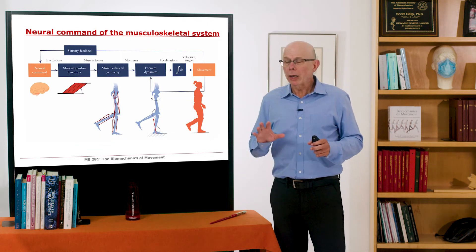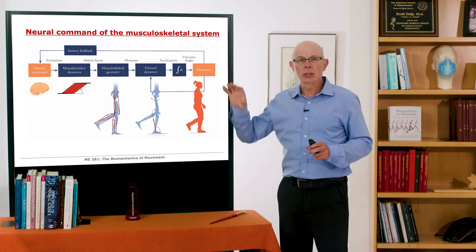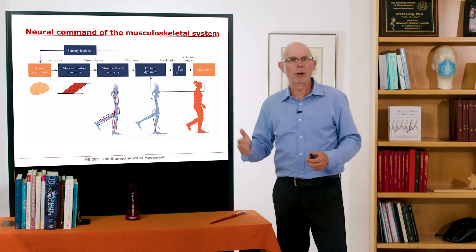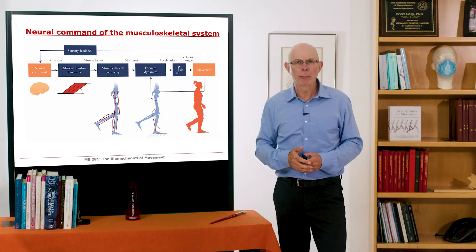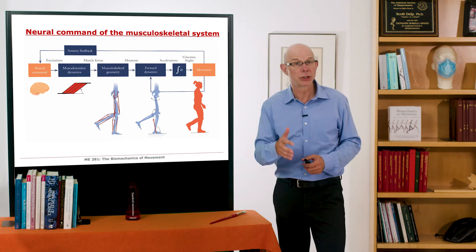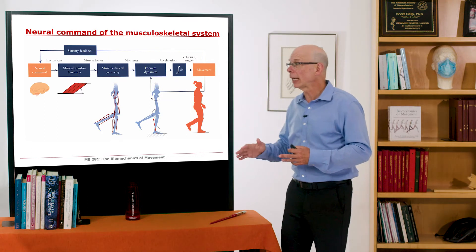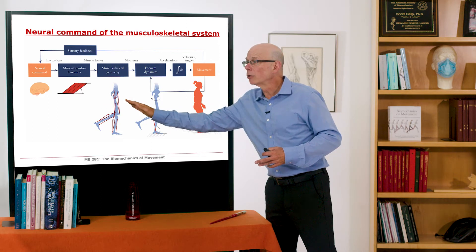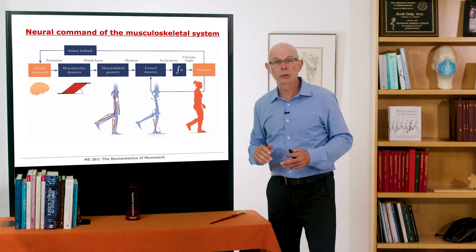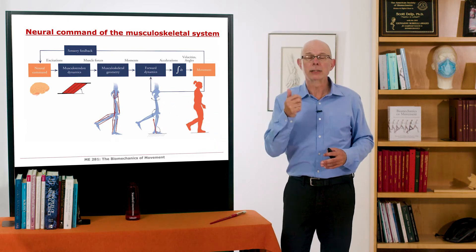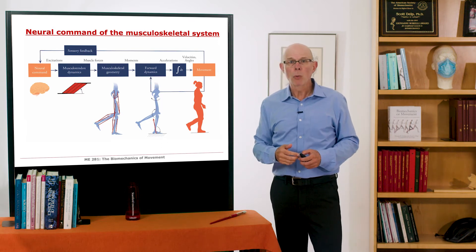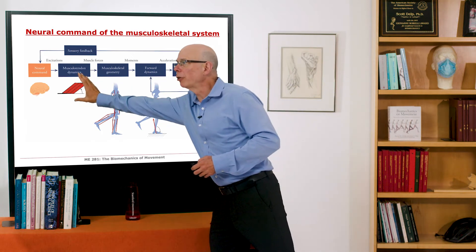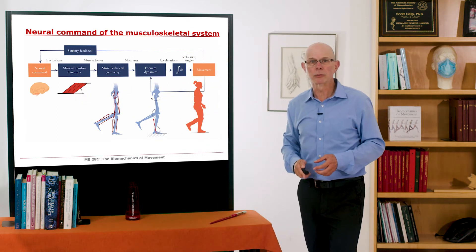We're starting with neural command of the musculoskeletal system. Using our general framework for the class, we'll begin with neural command, which activates muscle to generate muscle force, which acts on the skeletal system to produce moments about the joints. Those moments over time produce accelerations, velocities, and positions. Today we focus on activation — what's happening with your nervous system on its way to generating muscle forces.